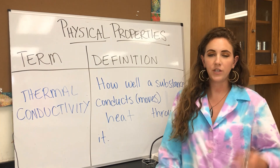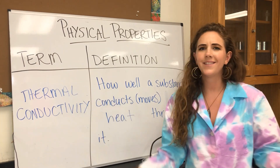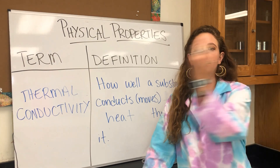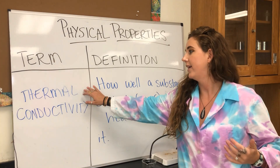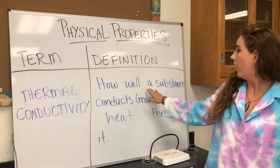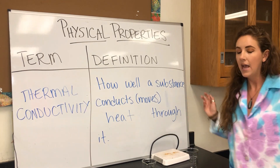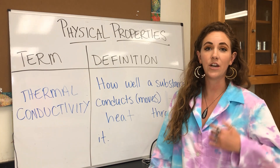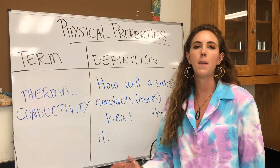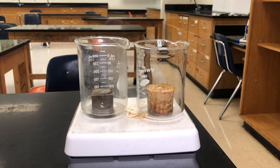Let's move on to our second physical property. We just talked about electrical conductivity, but what is thermal conductivity? We already know that conductivity means the ability to move something through a substance. Thermal is just another word for heat. So thermal conductivity is simply how well a substance conducts or moves heat through it. We're going to look at substances that are good conductors of heat and poor conductors of heat that do not do a good job moving heat through them.